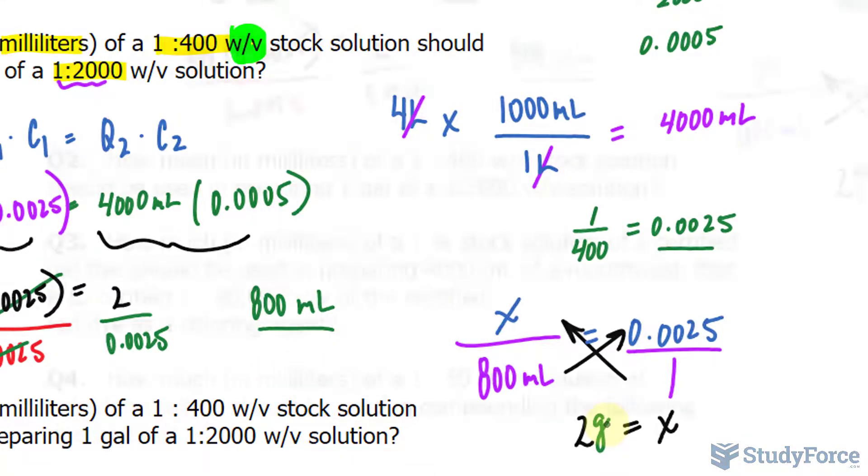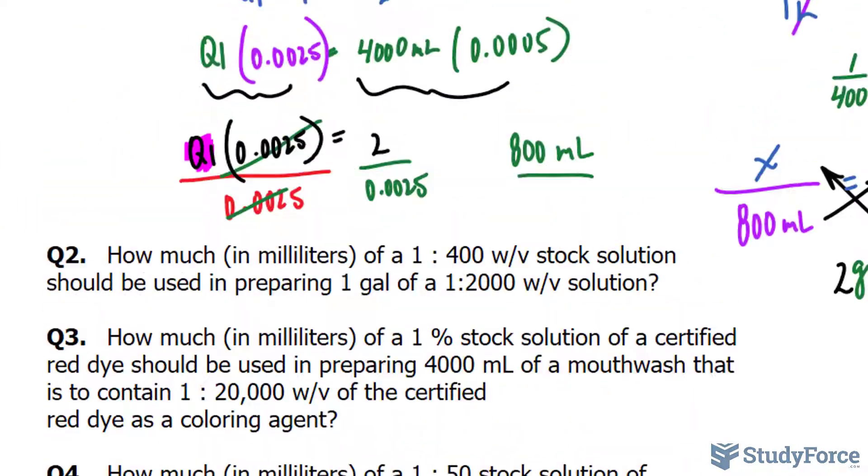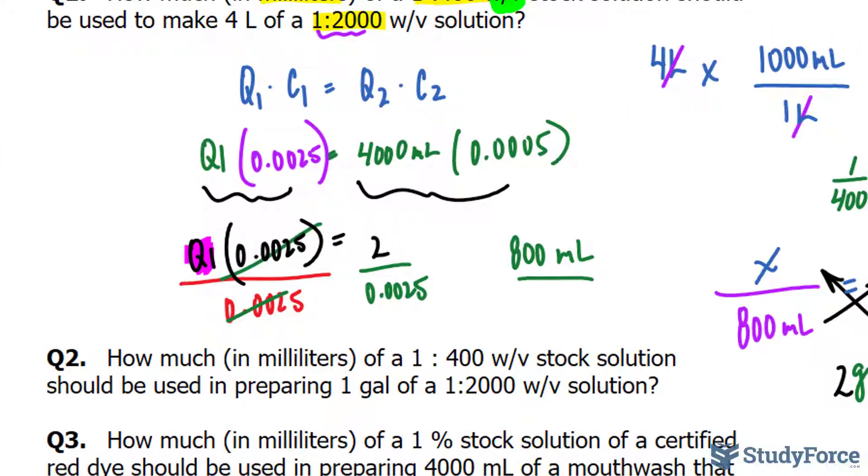Question number 2 on our list is almost identical to question number 1, with the exception that the final solution is in gallons, whereas this one was in liters. Gallons is an imperial unit, whereas liters is metric.